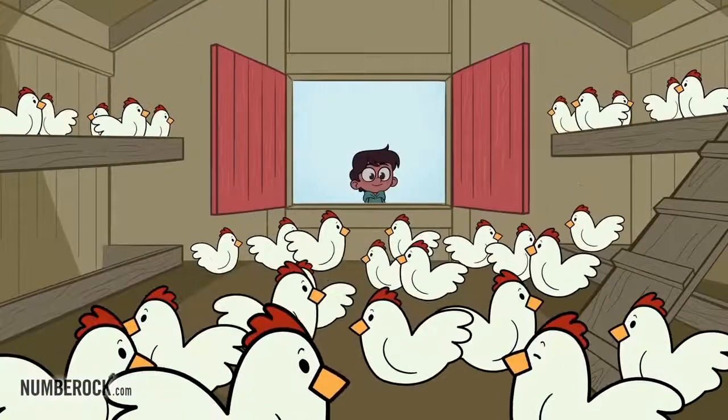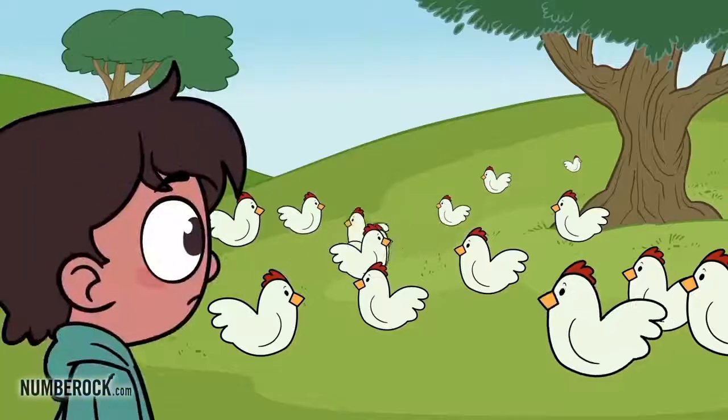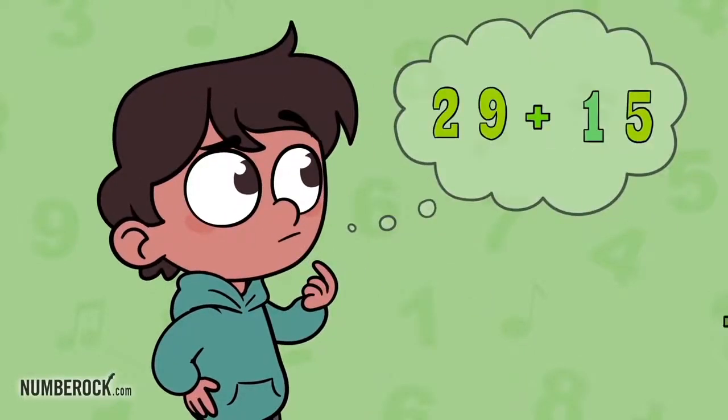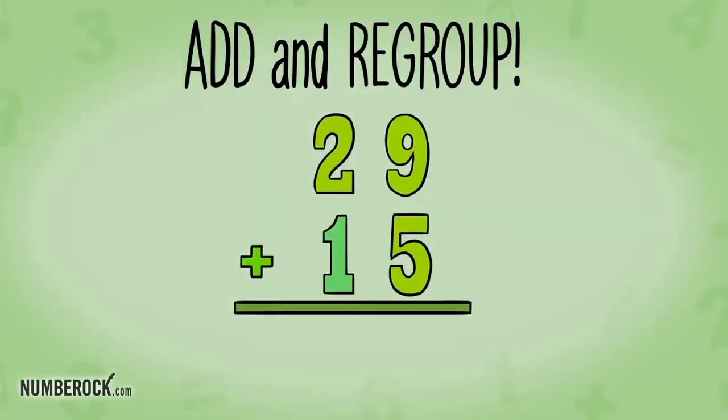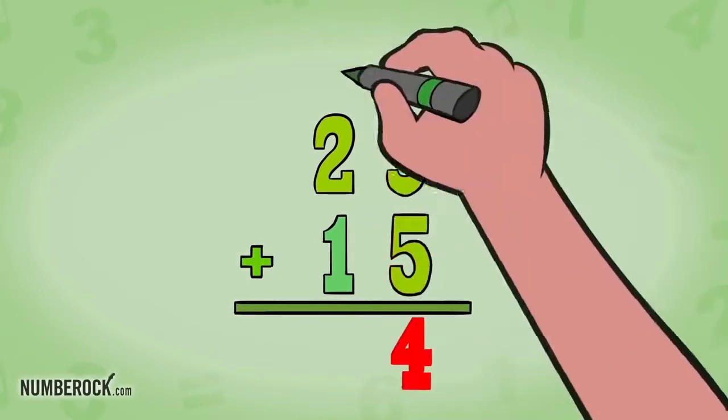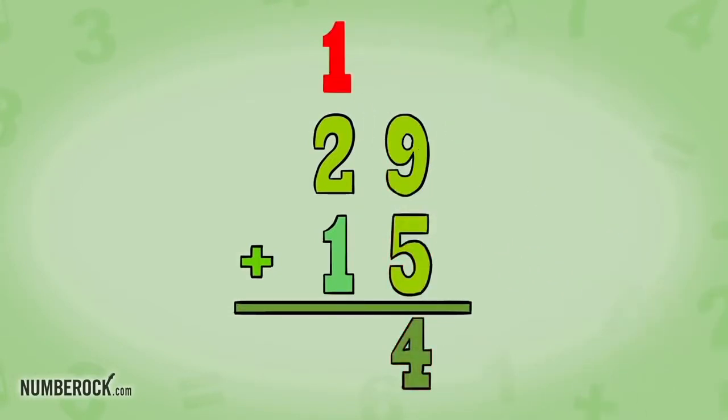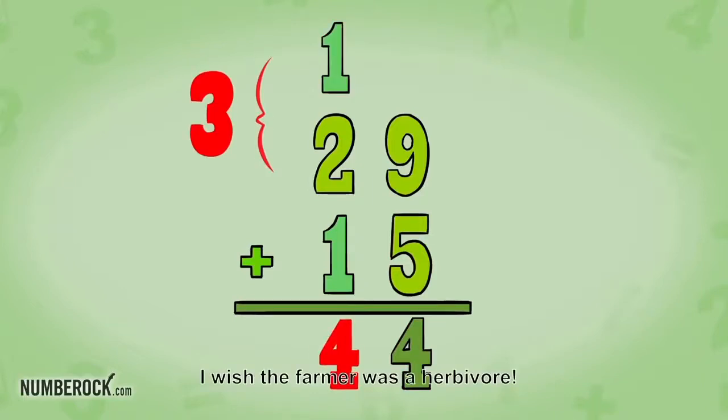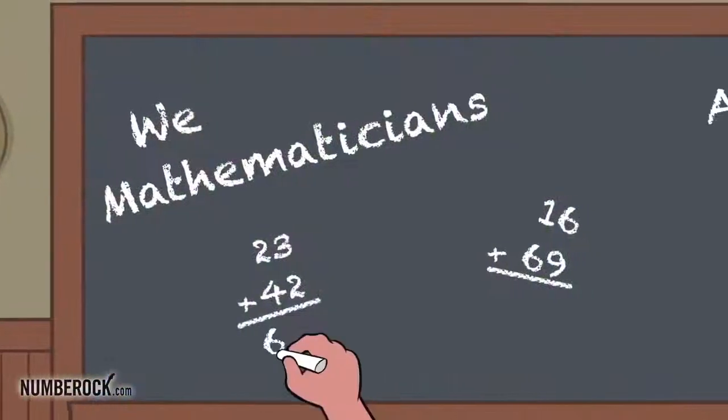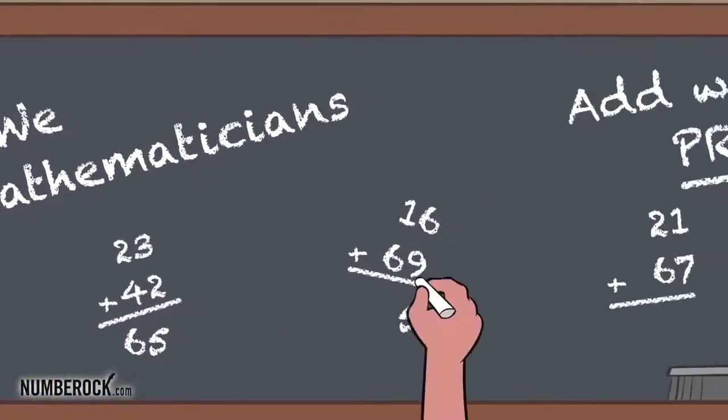29 hens are inside and 15 hens are outside. To find out how many hens are in the coop, we gotta know how to add and regroup. 9 plus 5 equals 14, write the 4, the 10 carries. 1 plus 2 is 3, plus 1 is 4. I wish the farmer was a herbivore. We mathematicians...